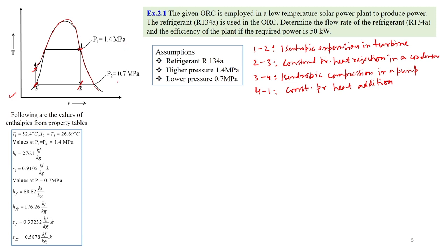In this example, the ORC conditions at states 1 and 2 are given by pressures P1 and P2. P1 is 1.4 MPa and P2 is 0.7 MPa. This ORC is employed in a low temperature solar power plant to produce power, and refrigerant R134A is applied as the working fluid. We need to determine the flow rate of the refrigerant and the efficiency of the plant if the required power is 50 kilowatt.